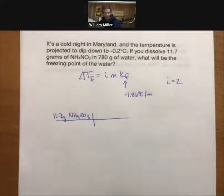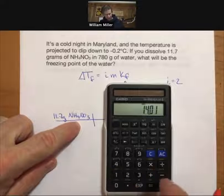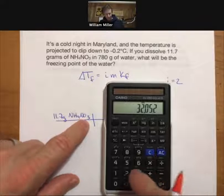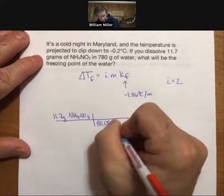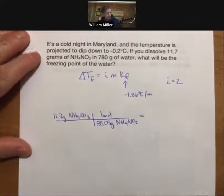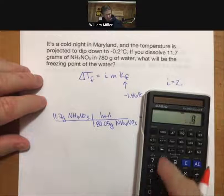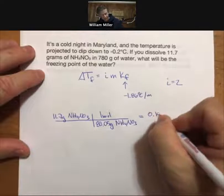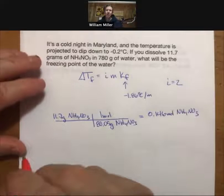We know that there are two nitrogens, there are four hydrogens, and there are three oxygens. 80.05, yes. I always have to get to that point and make sure that my units cancel. 0.146 moles, and those are moles of ammonium nitrate.